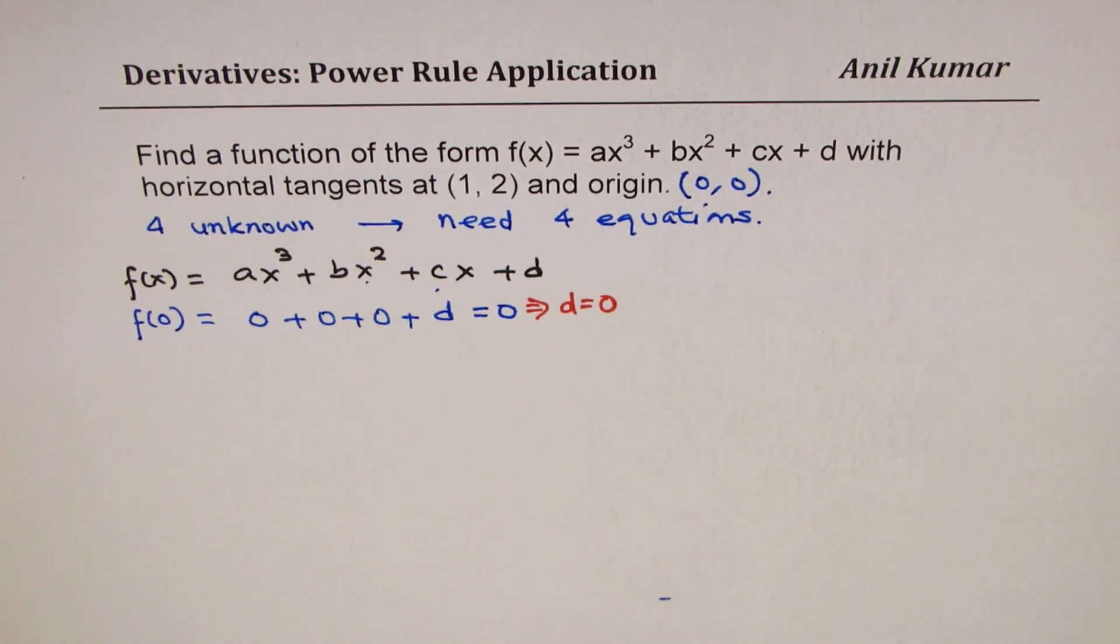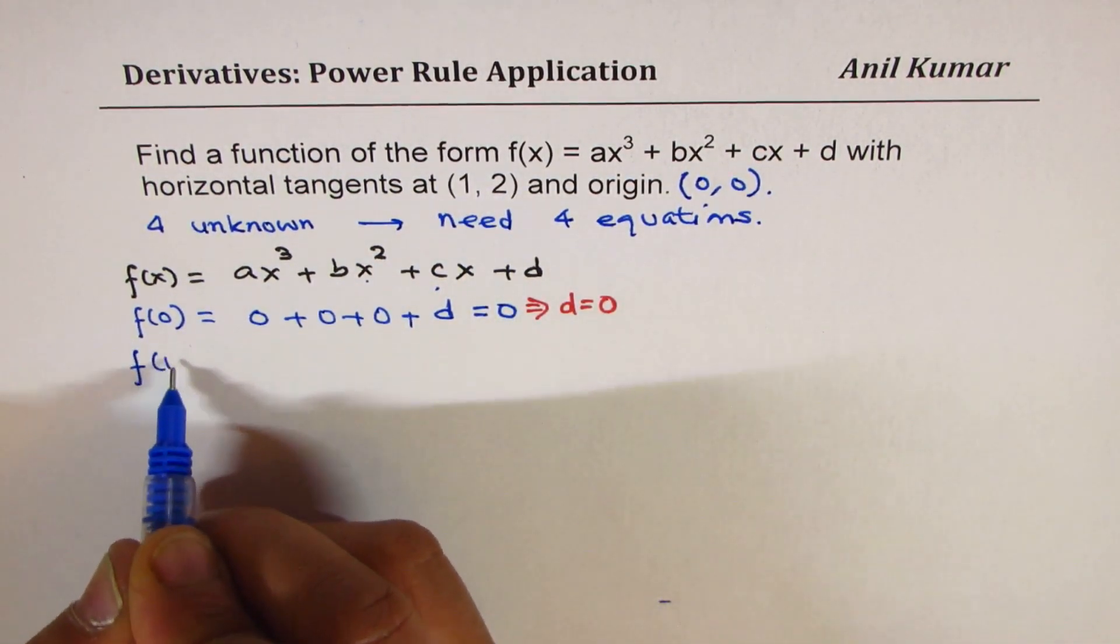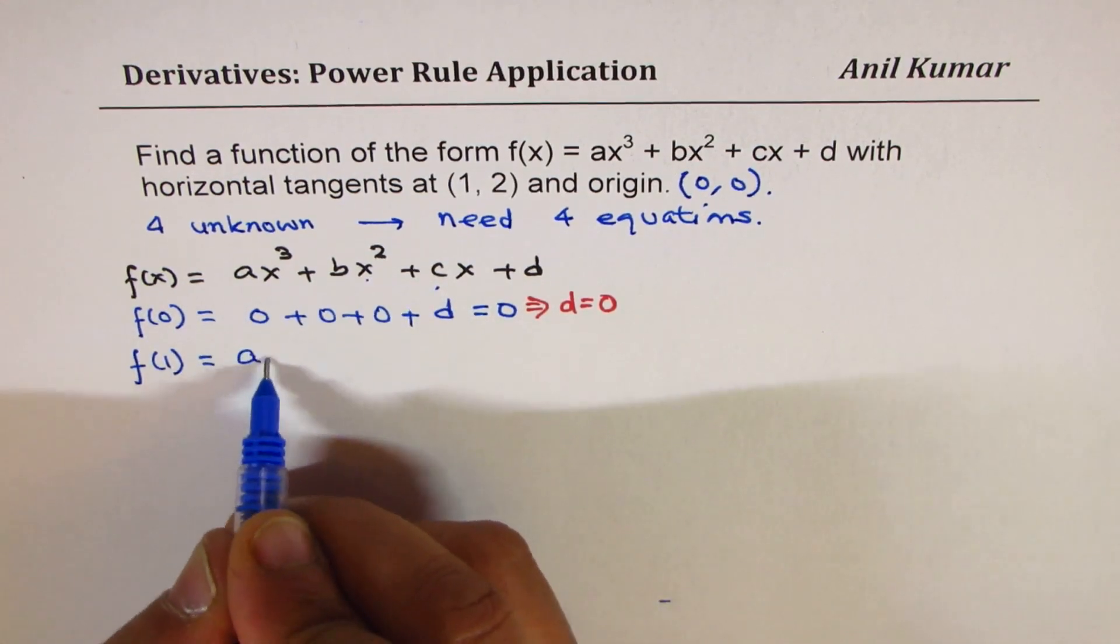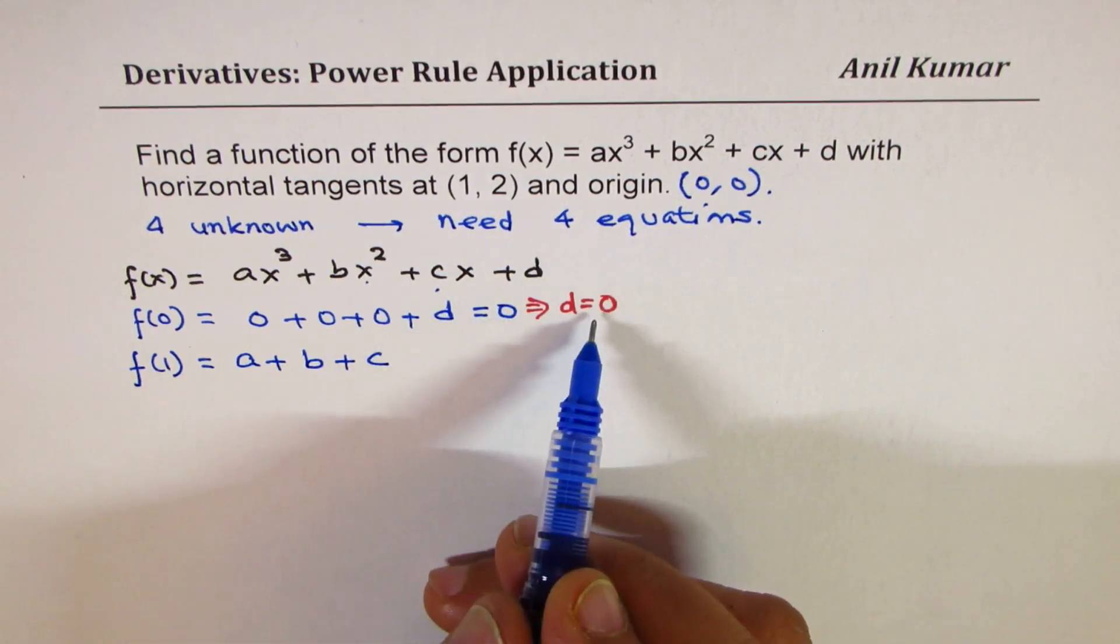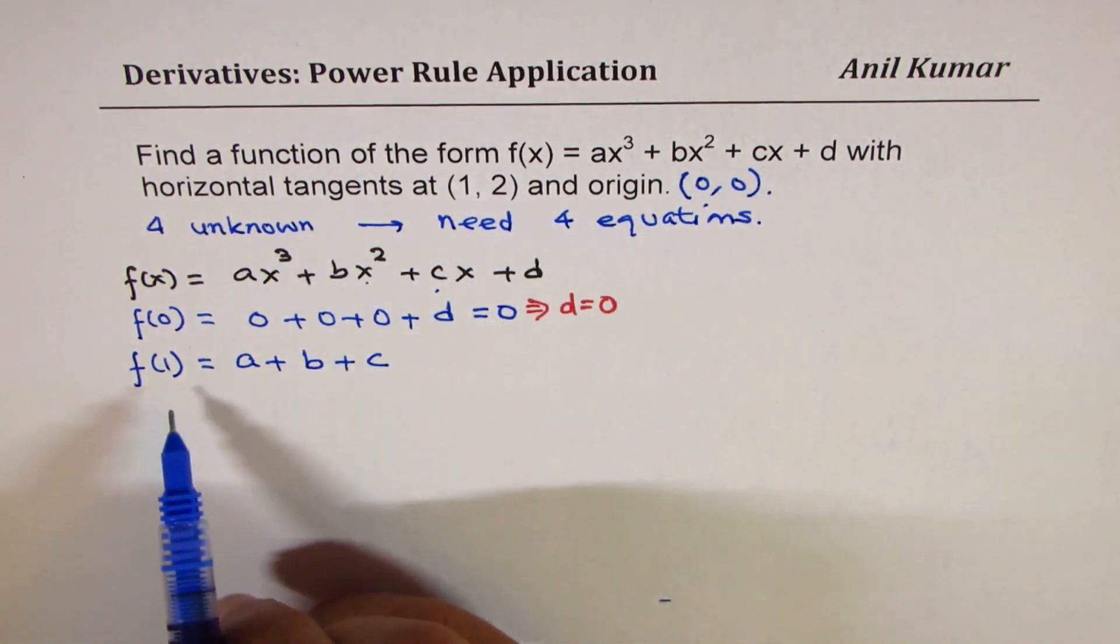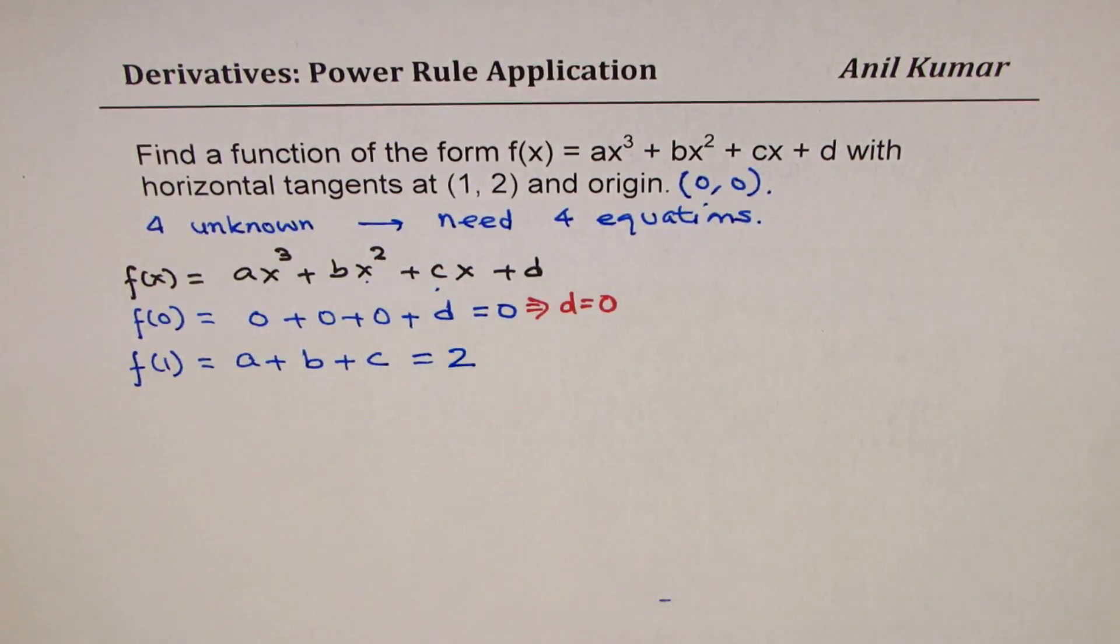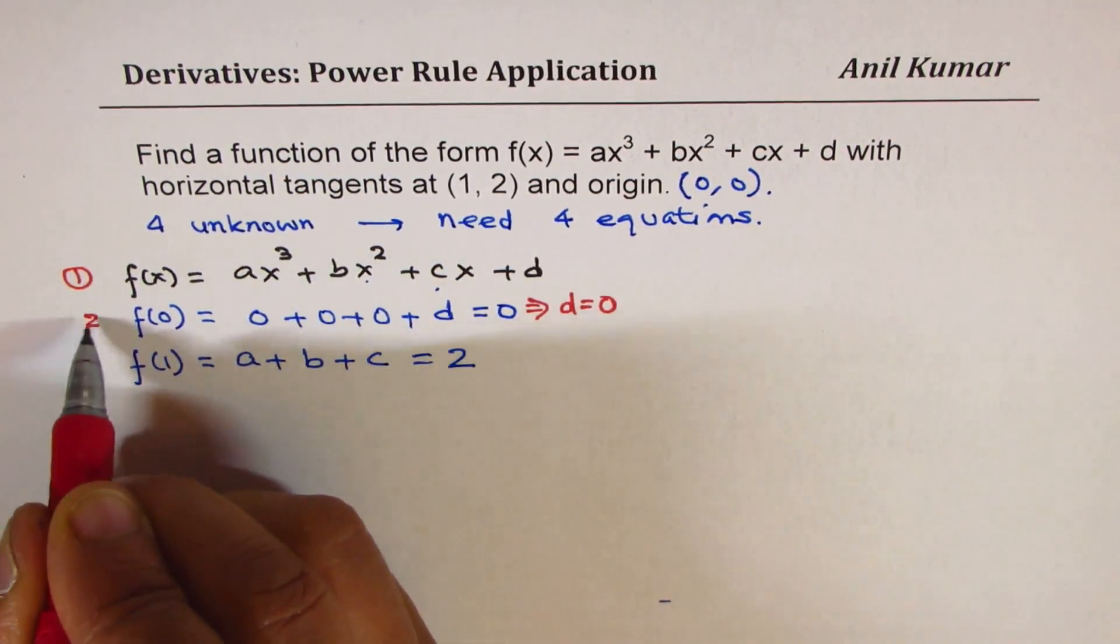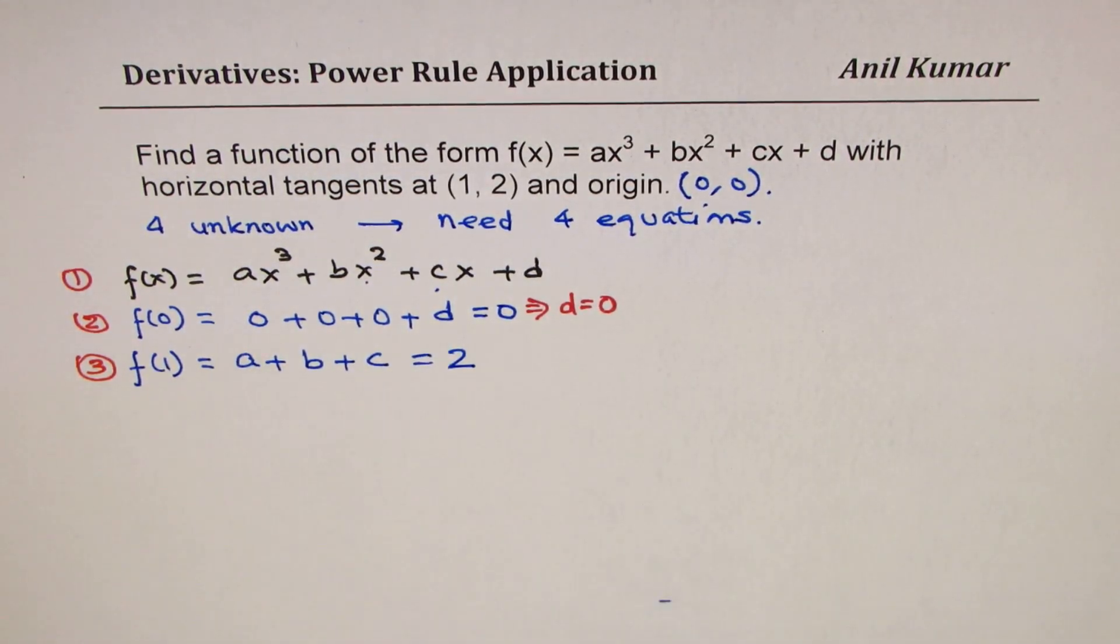Now let's get another equation, which is at 1, the value is 2. So that is to say that f(1) is equal to, if I write 1 here for x, I get a plus b plus c. Now d is 0, so I am not writing anything. But at 1, the value is 2. So I am writing this as equal to 2. So we have a plus b plus c equals to 2.